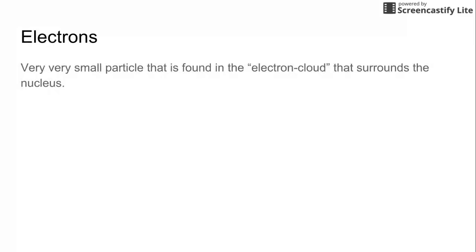The electrons are really, really small particles that are found in the electron cloud that surrounds the nucleus. So they kind of float on the outside of the nucleus and aren't in that more compacted area. The electrons have a negative charge. So remember, electron, negative charge.